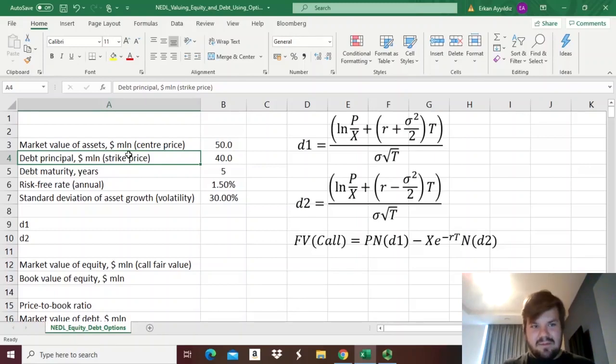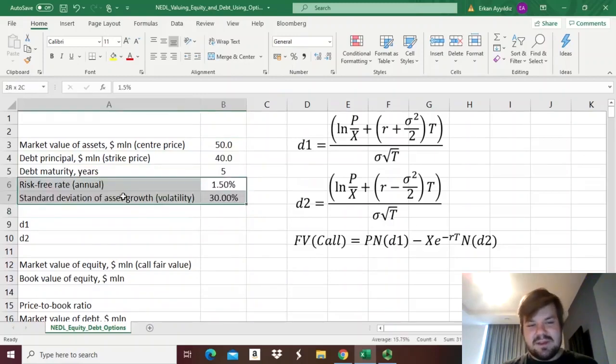So we can value the equity of a company that abides by these rules, using the Black-Scholes formula. And that's why we need the risk-free rate, and that's why we need the volatility,